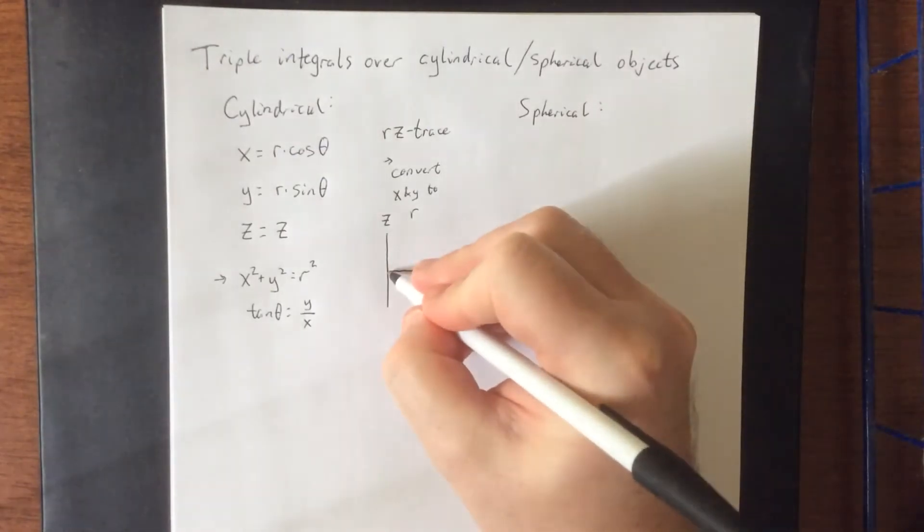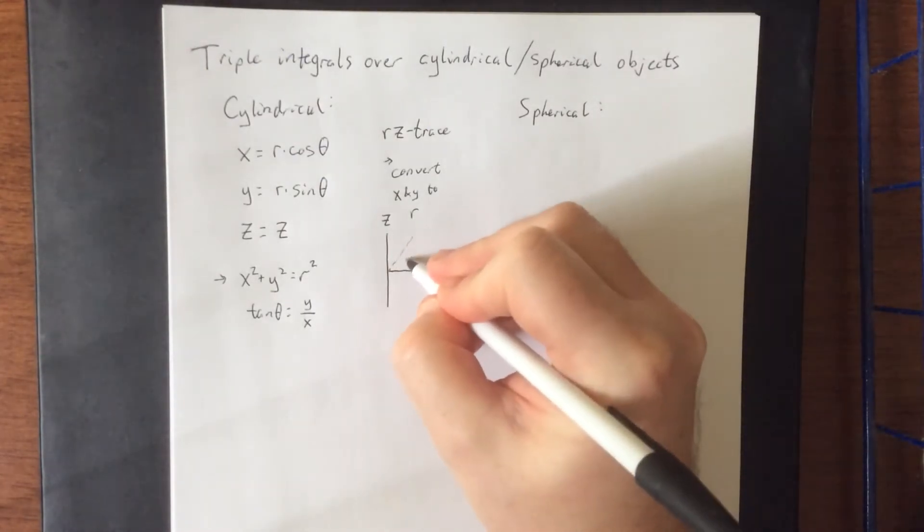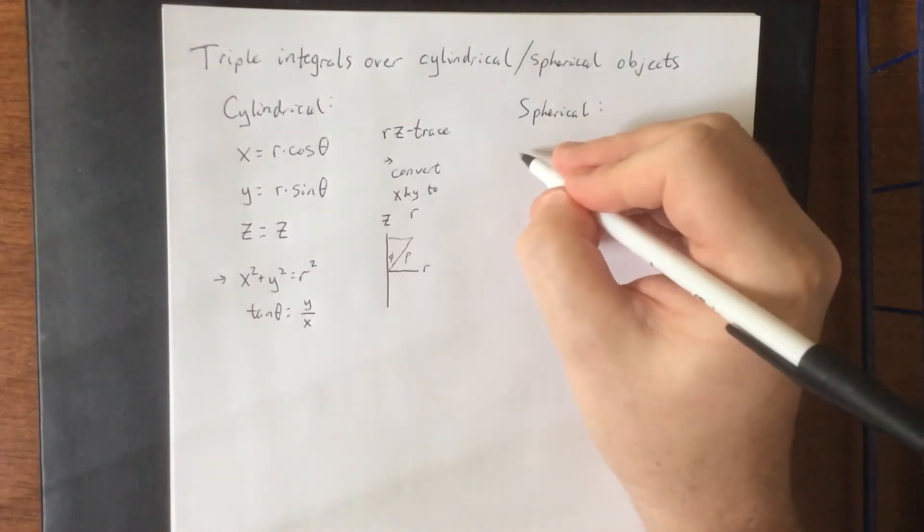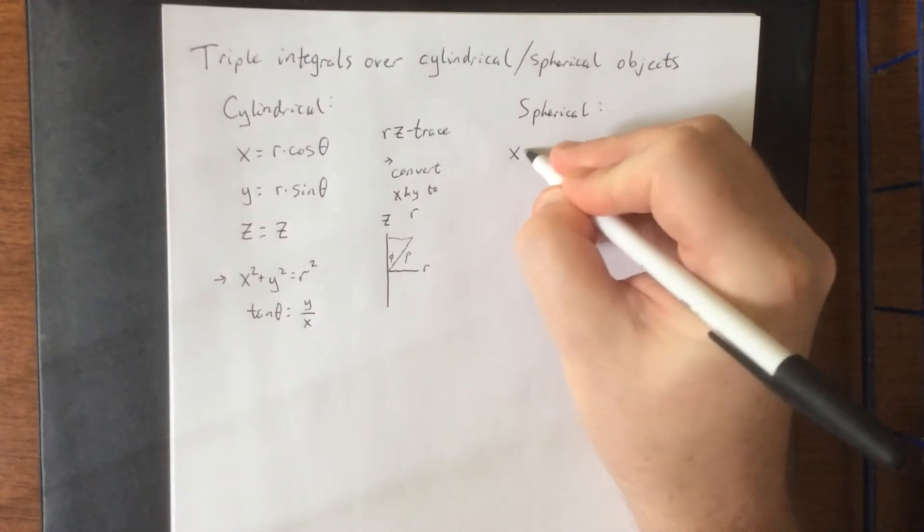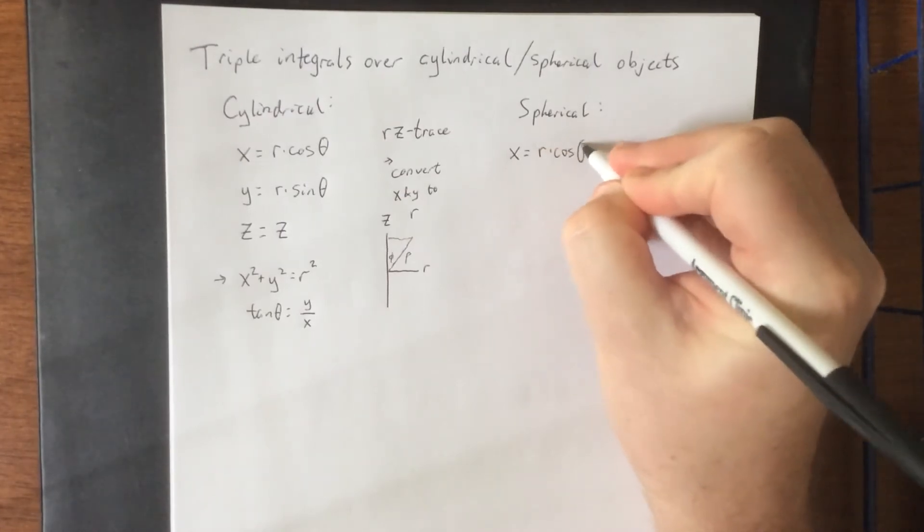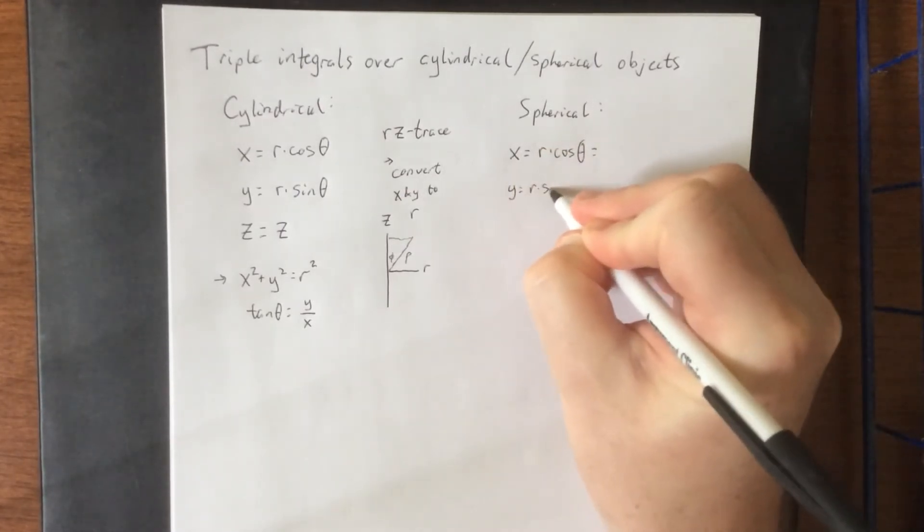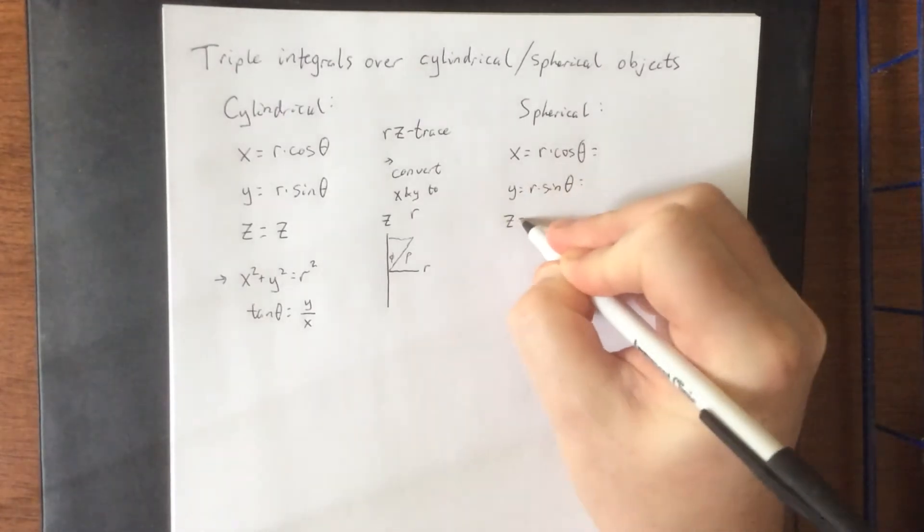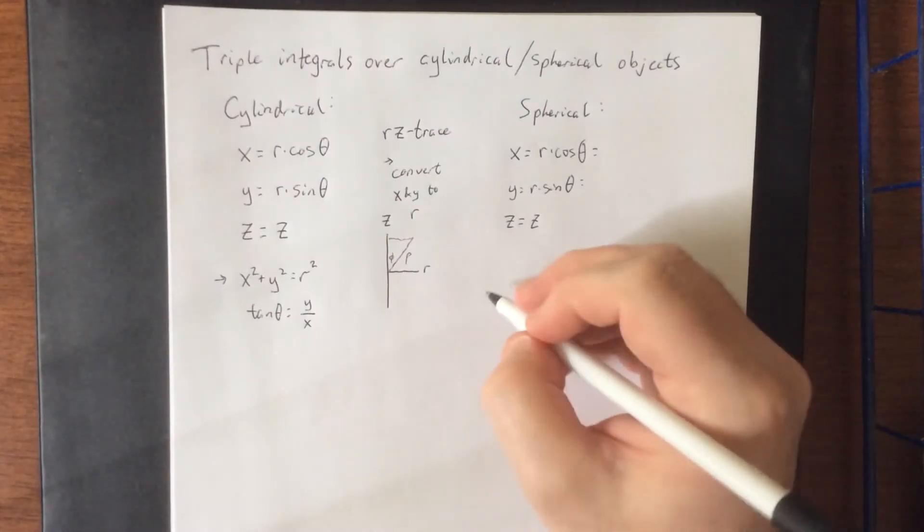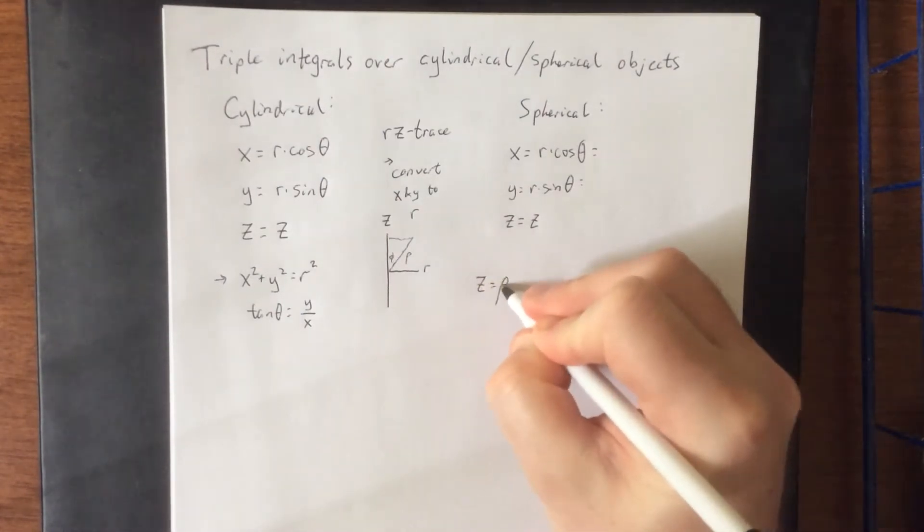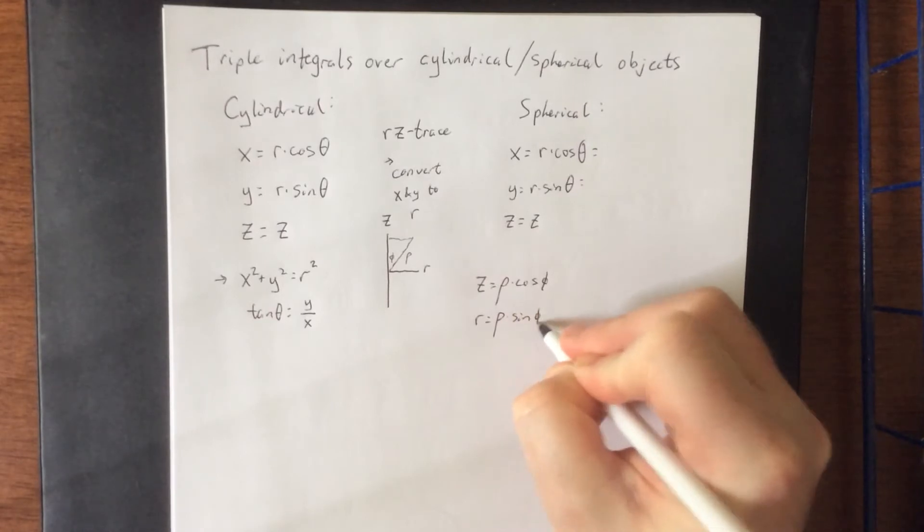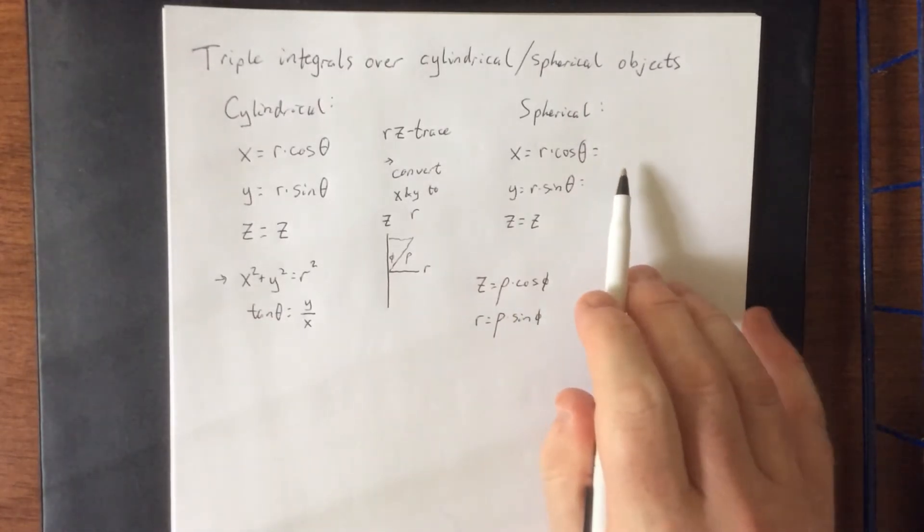So in spherical coordinates this is where we defined two new quantities, one being rho and the other being phi. As a result we would get that x is equal to r times the cosine of theta, y was equal to r times the sine of theta, and z was equal to z. The two additional conversions that we get here are that z would be equal to rho times the cosine of phi and r is equal to rho times the sine of phi.